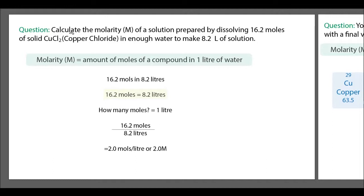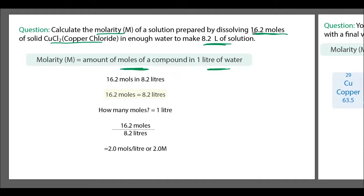The first and most important part is it says 'calculate the molarity,' so our answer has to be in terms of molarity. Molarity means the amount of moles of a compound in one liter of water. So we're looking for moles per one liter. Here we have 16.2 moles of copper chloride in 8.2 liters of water.